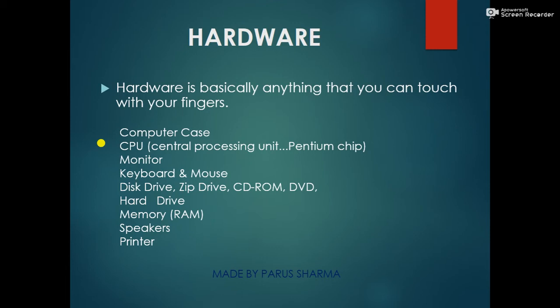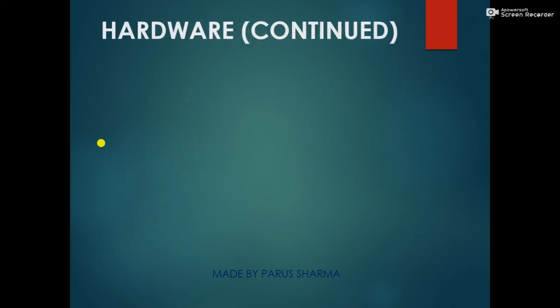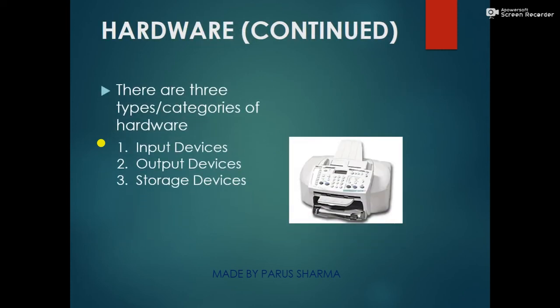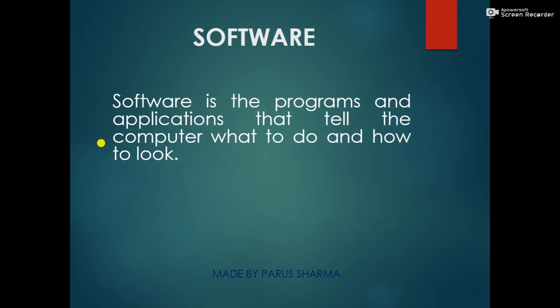monitor, keyboard, mouse, and many more. There are three categories of hardware: input devices, output devices, and storage devices. Software is the programs and applications that tell the computer what to do and how